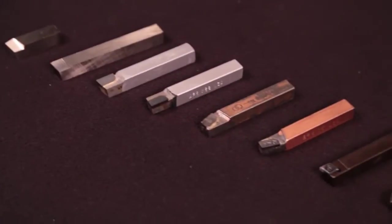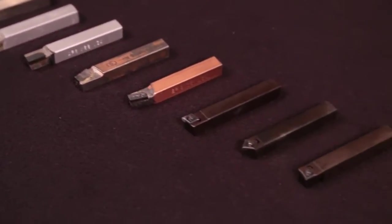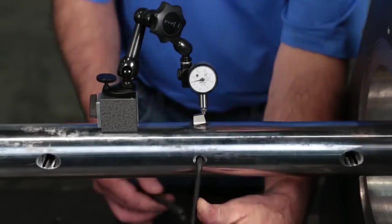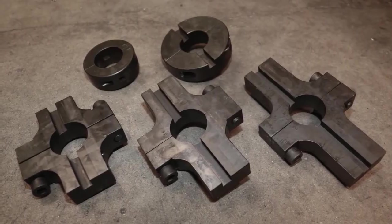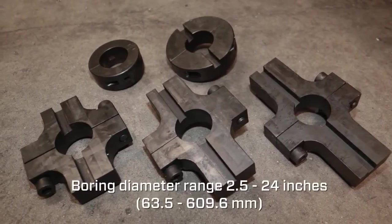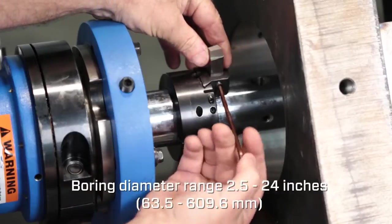Tool bits are available in high-speed steel or carbide. Place a cutting tool in the tooling hole or use a tool head for larger bores. The BB5000 has a boring range of 2.5 to 24 inches.